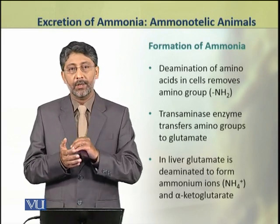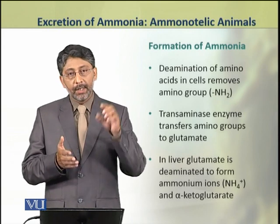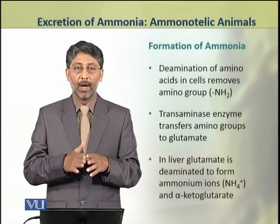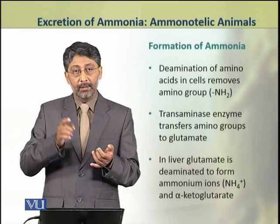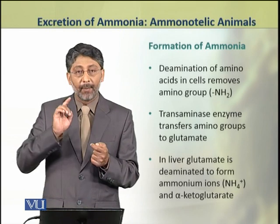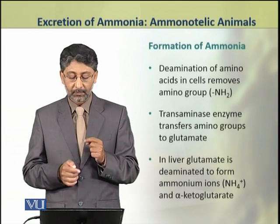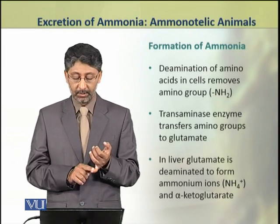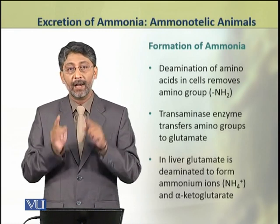Now we shall discuss the mechanism of formation of ammonia. The deamination of amino acids in the cells removes the amino group (NH2 group). Then, the transaminase enzyme transfers the amino group to the amino acid glutamate. In the liver, glutamate is deaminated to form ammonium ions and alpha-ketoglutarate.